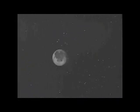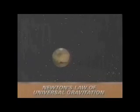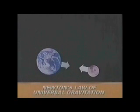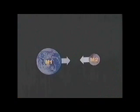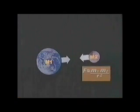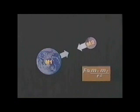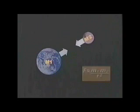They explain why a satellite stays in orbit. Newton's law of universal gravitation: any two objects in the universe, such as the earth and the moon, attract each other with a force directly proportional to the product of their masses and inversely proportional to the square of the distance between them.